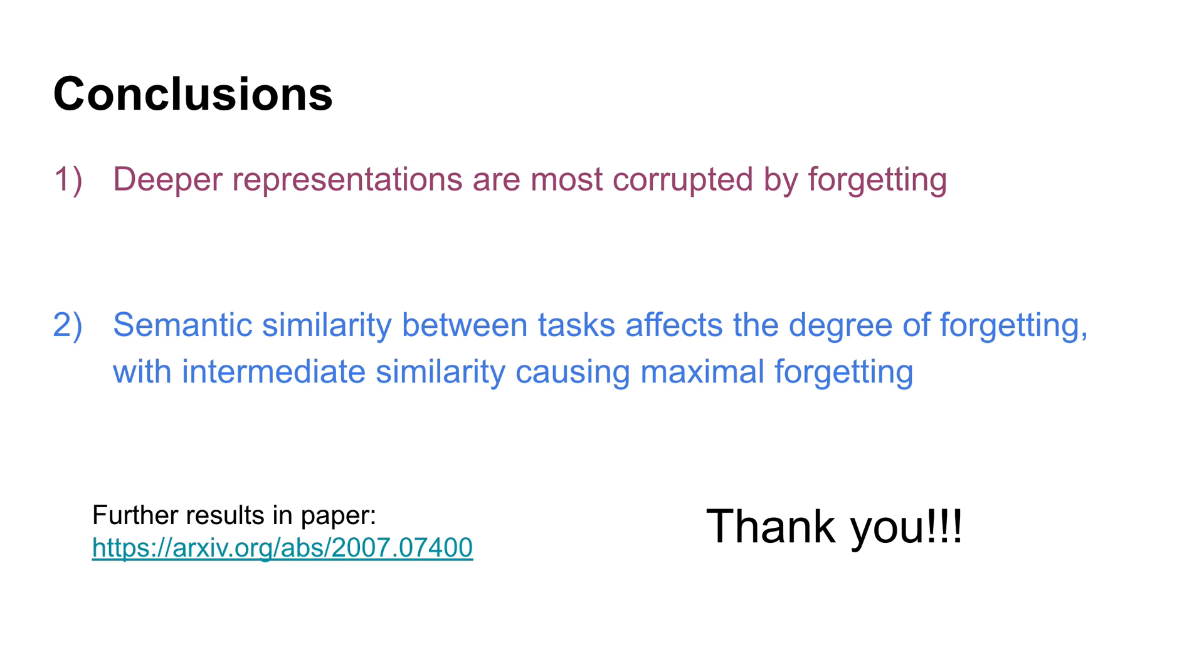With that, let me conclude. The two high-level takeaways from our investigation are that, one, the deepest hidden representations of the model are the ones most corrupted by forgetting, at least in this image classification setting that we've studied here. And two, there's a definite relationship between task semantics and forgetting, and the worst forgetting performance is seen for task sequences of intermediate similarity.